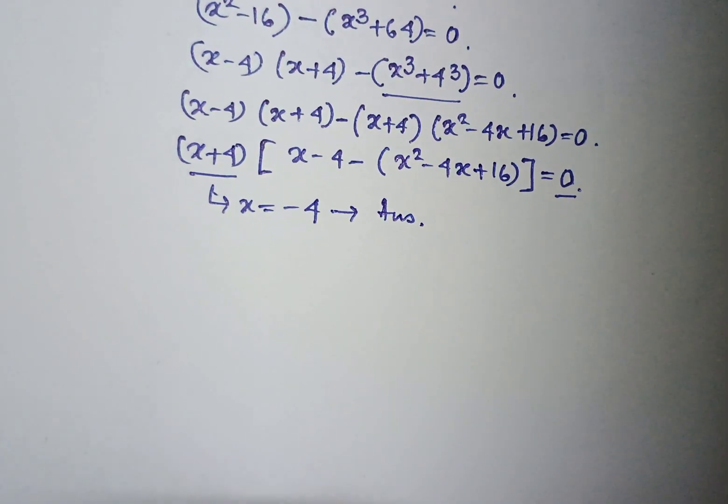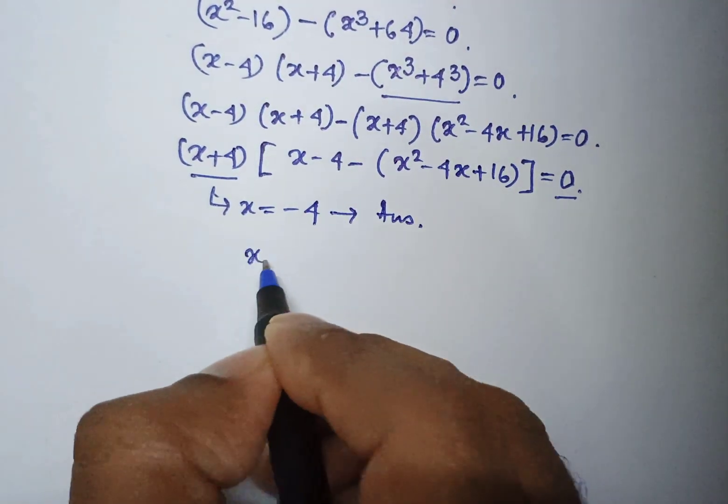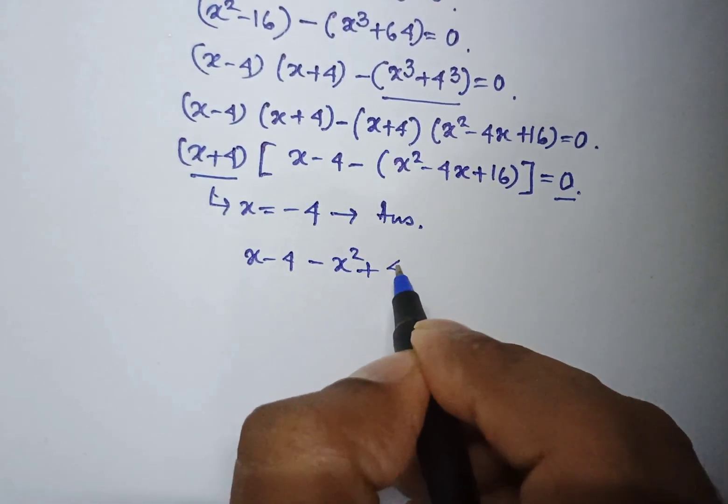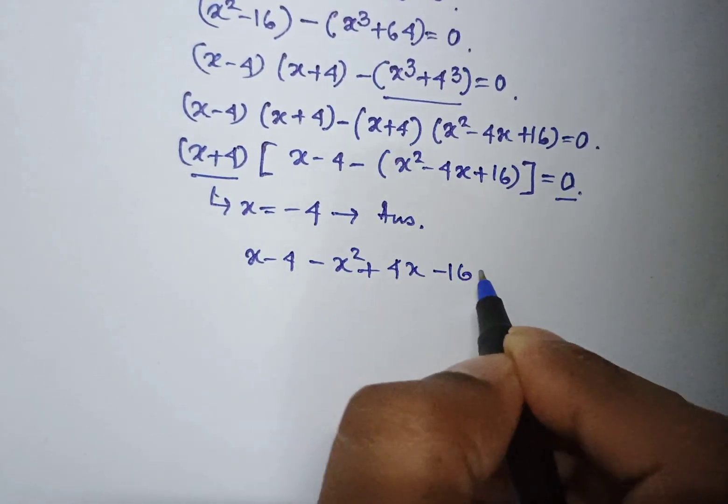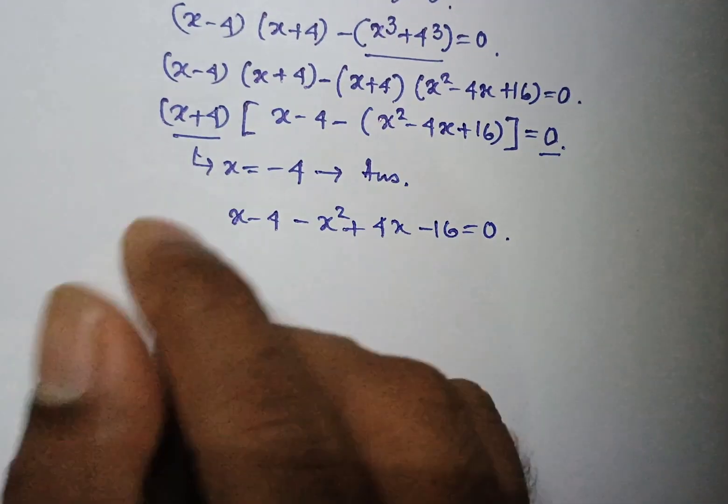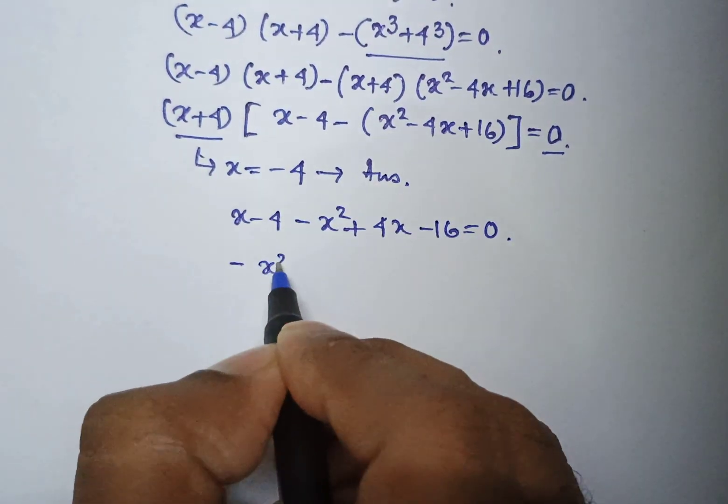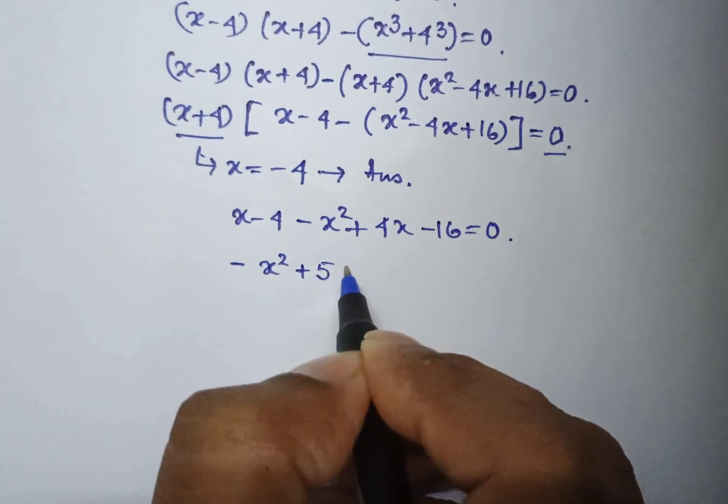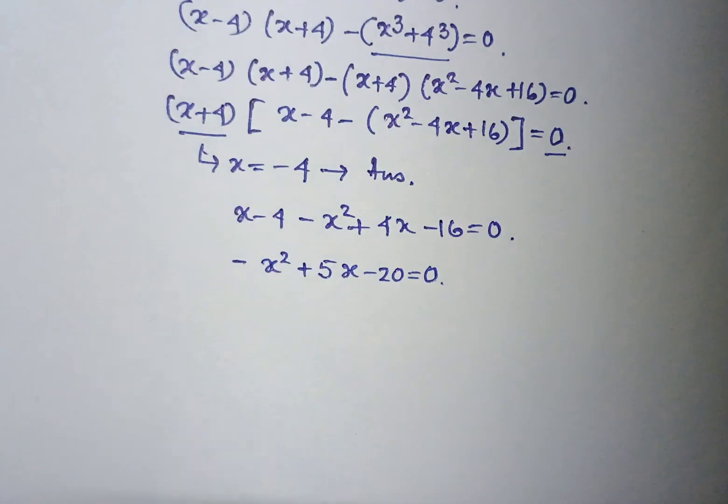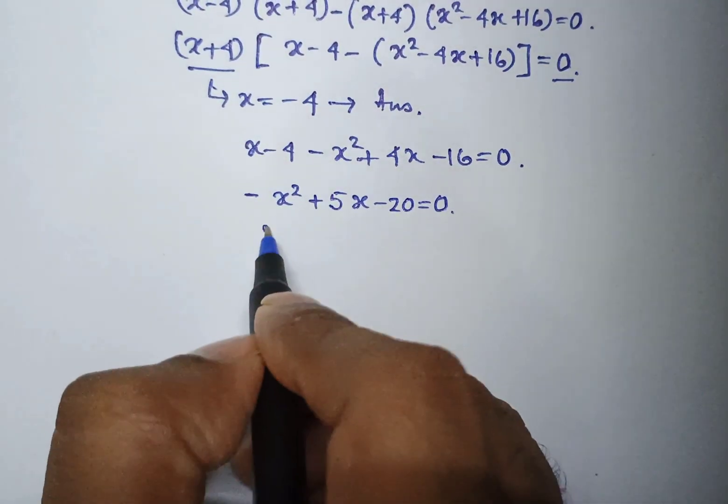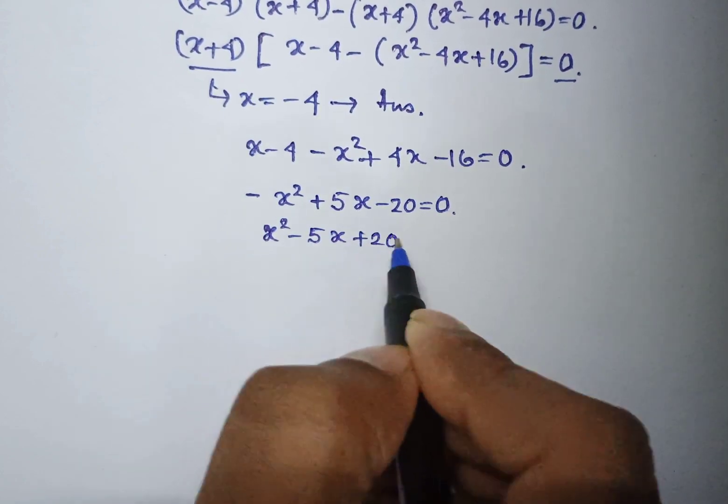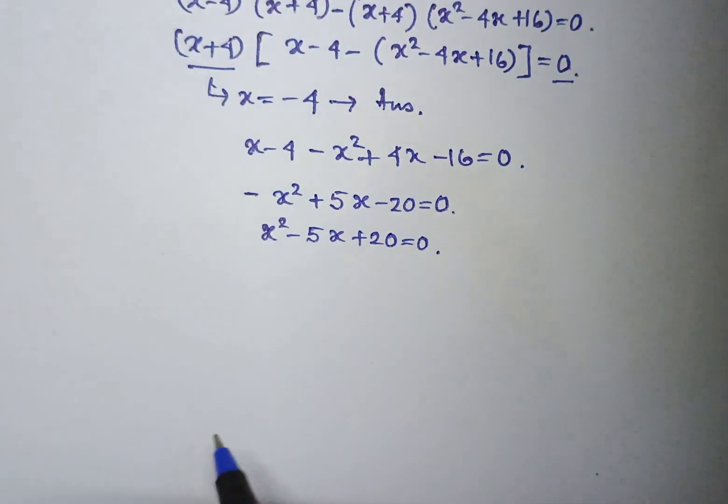For the other one, the expression becomes x minus 4 minus 4 minus x square plus 4x minus 16 equal to 0. That means minus x square plus 5x minus 20 equal to 0. Multiplying minus 1 in both sides, the expression becomes x square minus 5x plus 20 equal to 0.